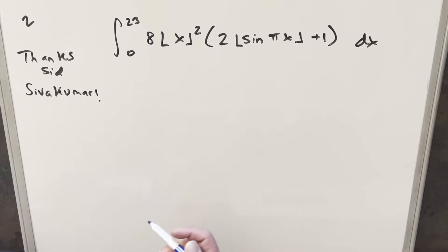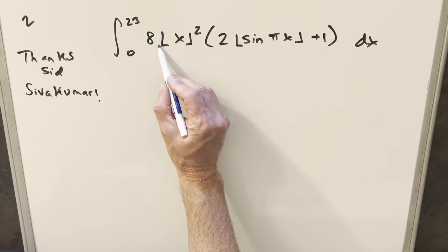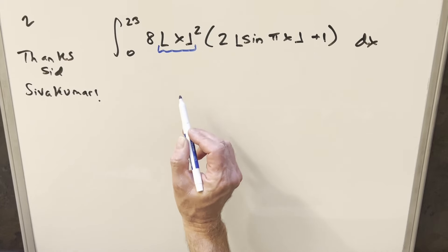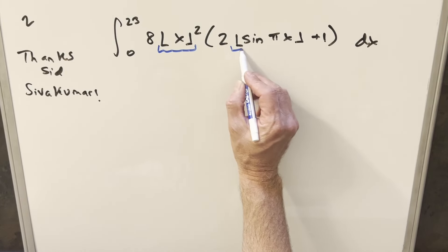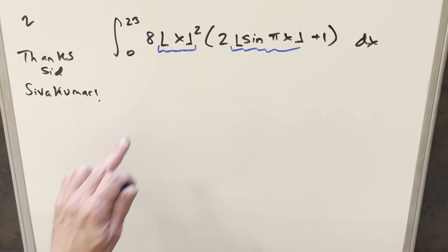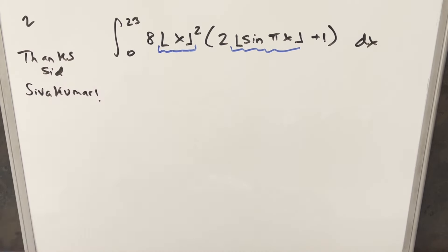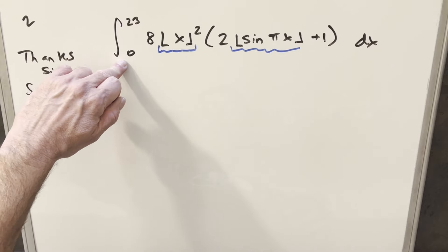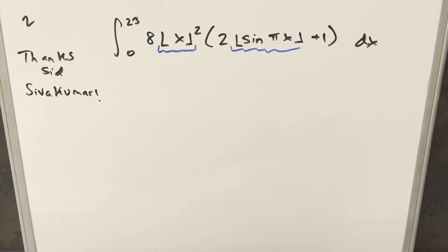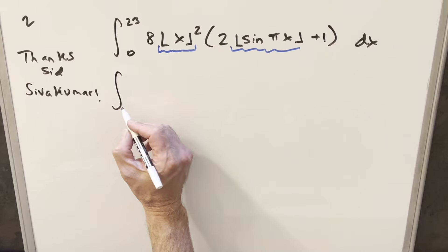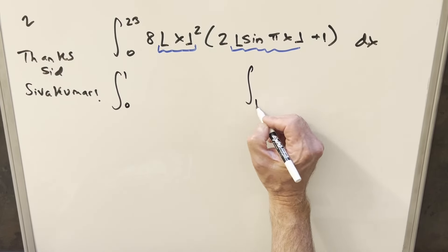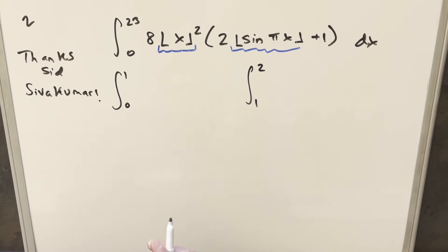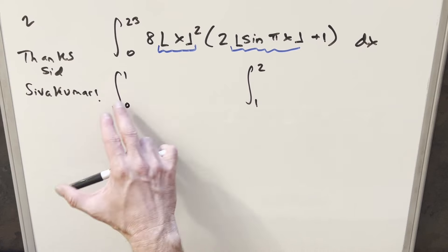For this one, the first thing I want to deal with is the floor function, and we have it in two places. What I like to do for the floor function is break up the bounds where the lower bound differs from the upper bound by 1. So we're going to have 24 integrals — the first going from 0 to 1, the second from 1 to 2, and so on. When we do this, the floor rounds us down to the lower integer.